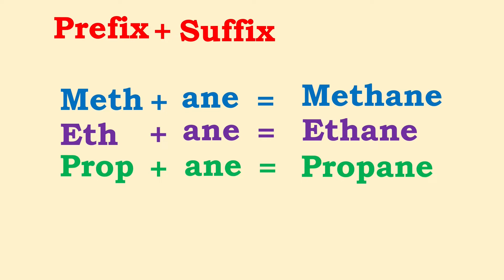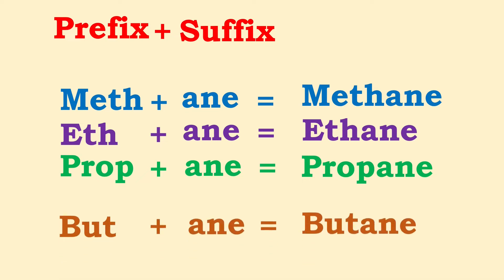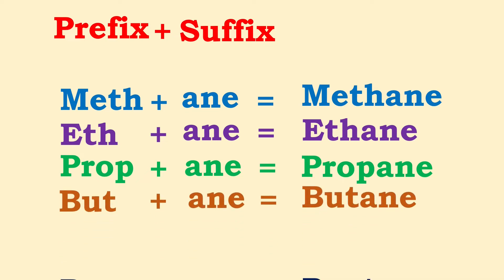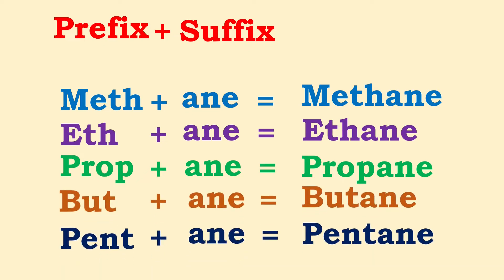In the same way, 'prop' means three, so propane means an alkane having three carbon atoms. 'But' means four, 'pent' means five. So we have methane (one carbon), ethane (two), propane (three), butane (four), and pentane (five). The prefix 'hex' means six carbon atoms — hexane contains six; heptane has seven, octane eight, nonane nine, and decane contains ten carbon atoms.